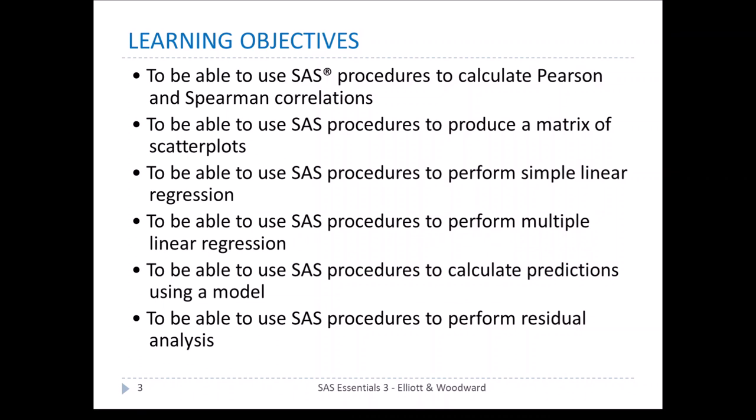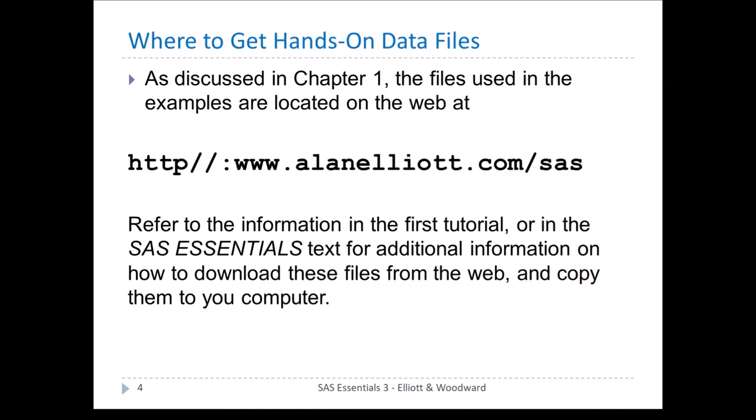In this chapter, we're going to be looking at procedures to calculate Pearson and Spearman correlations, procedures to produce a matrix of scatter plots, also to perform a simple linear regression and a multiple linear regression, and procedures to calculate predictions using a model, as well as using SAS procedures to perform residual analysis. If you'd like to follow along with examples, please download the files at this web location. Let's get started.